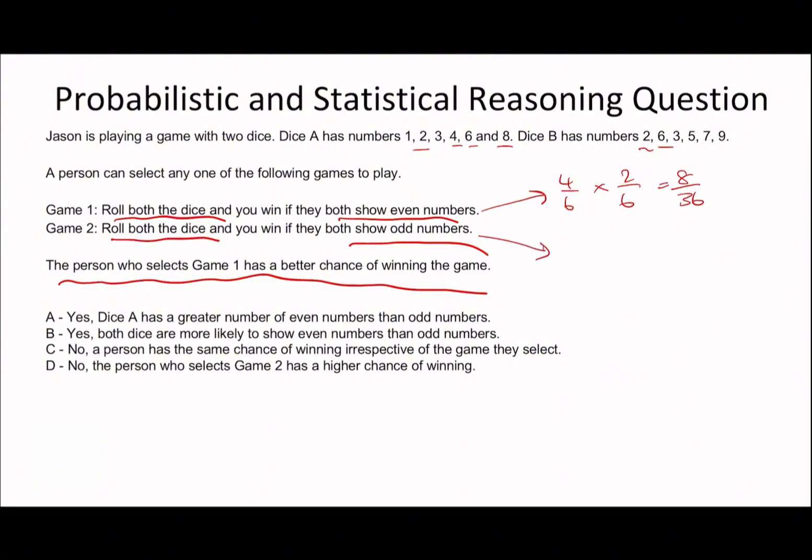On game two, they both show odd numbers. Odd numbers is 1, 2. So 2 out of 6. And then it's going to be 4 out of 6 because numbers are either odd or even. You can see 2 of them are even here. So 4 must be odd here. So you can see equal chances. The person who selects game one has a better chance of winning. I'd say no. And you can see C is going to be the correct answer here.